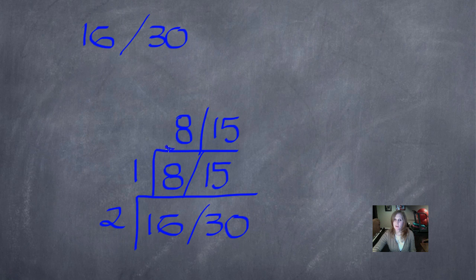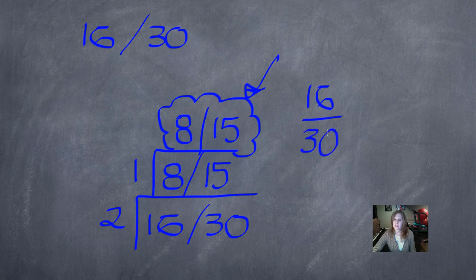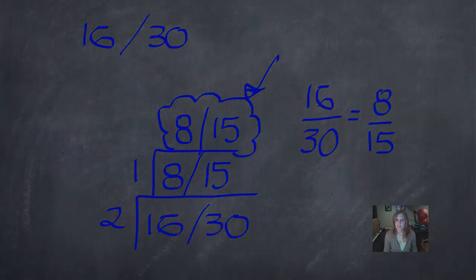There, I've repeated my fraction, so I know I have gone as far as I need to go, and I can find my bride and groom on the top. I'm going to rewrite this in vertical form. 16/30 is equal to 8/15. I just simplified 16/30.